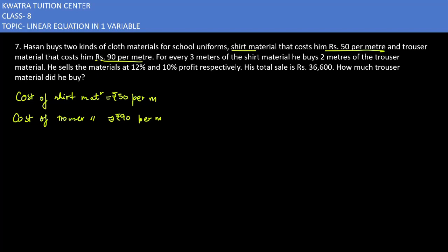Now they have mentioned that every 3 meters of shirt material he buys, he also buys 2 meters of trouser material. So the relation given is: shirt material purchased is 3 meters, and trouser material purchased is 2 meters.